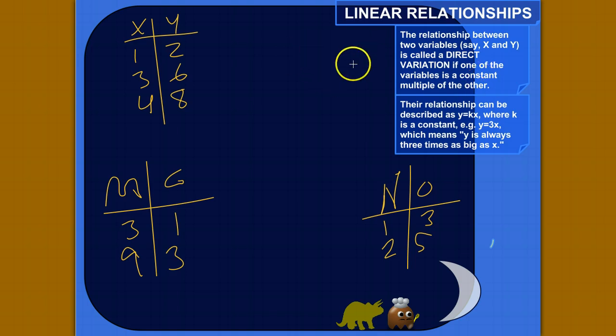And actually, if there is a direct variation between x and y, or as we'd say, y varies directly as x, you can describe their relationship with an equation like this. So, for example, y equals 3x, which means whatever x is, y is 3 times as big. So that's what we mean by a constant. Y would be a constant multiple of x, because just plug in whatever for x, multiply it by 3, and you'll get y. So y is always 3 times as big as x.